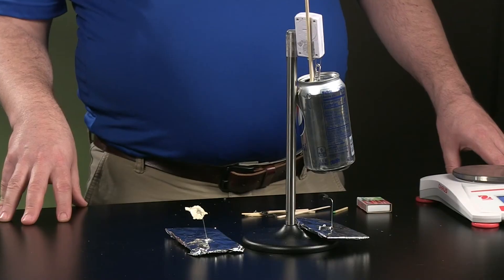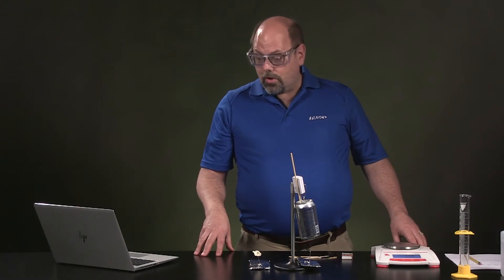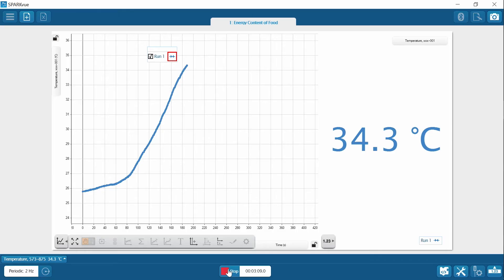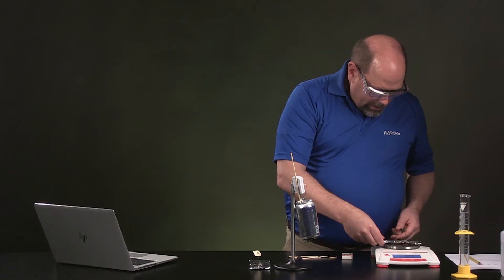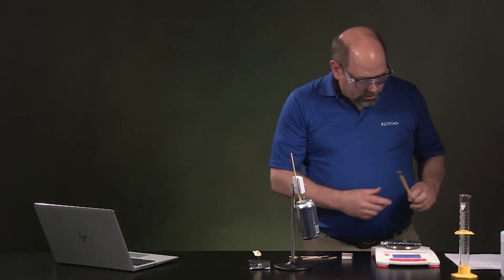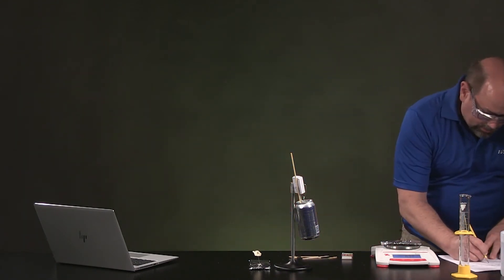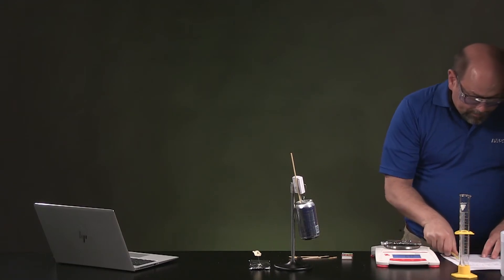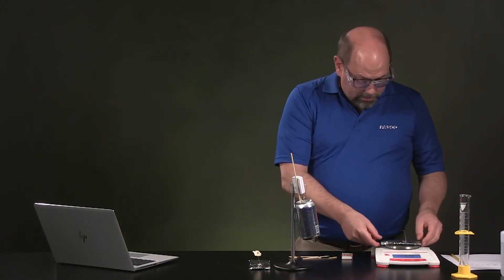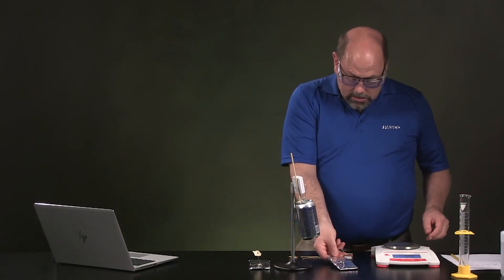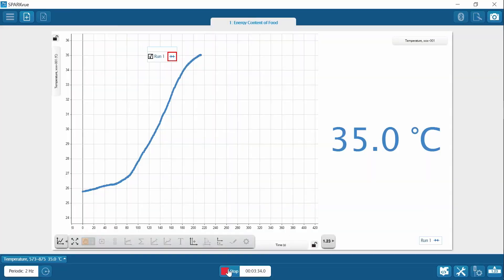The flame has gone out on the peanut. It's burned as much as it can. You don't need to burn it all. You just need to know how much it was you burned. I can see that the temperature is still going up a little bit. So, while we're waiting for that to keep, you know, stop going up, I'm going to go ahead and move this and weigh it. We'll find out how much burned. Now, that's 6.32 grams. So, that's 0.42 grams of peanut that had burned. The temperature still is going up a little bit more. I'm going to let it finish warming up.